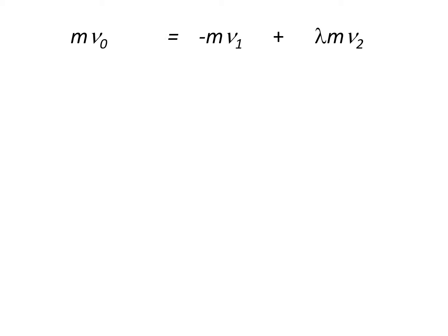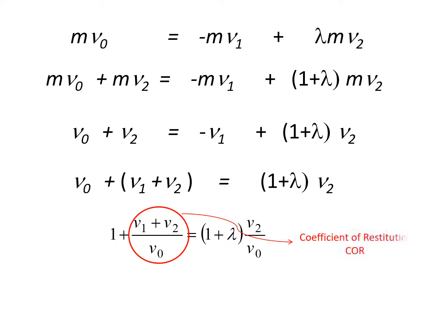We start with the equations of momentum. Then add m v2 to both sides of the equations. In the end, you get the expression of v2 divided by v0, expressed as 1 plus coefficient of restitution divided by 1 plus lambda.